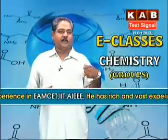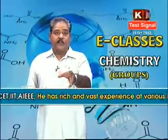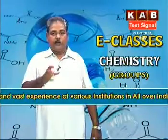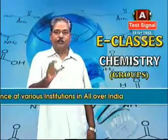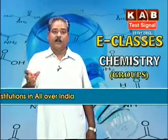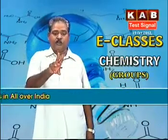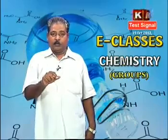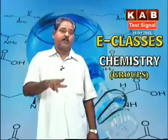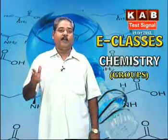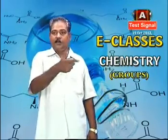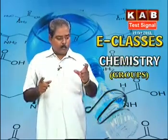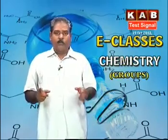Sulfite is a reducing agent; it loses electrons. While balancing reactions, SO3²⁻ becomes SO4²⁻ and the change in oxidation state is +4 to +6, a change of +2. Why does sulfite want to become sulfate? That reason lies because of the effect of lone pairs.